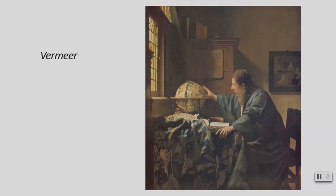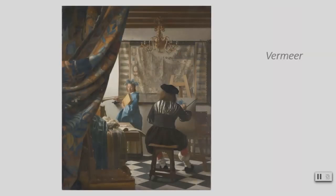Here is Johannes Vermeer from the 17th century. This one is called The Astronomer, 1668. I saw this one in the Louvre when I went to Paris. Here is The Art of Painting, 1666. The dimensions are 47 by 39 inches.